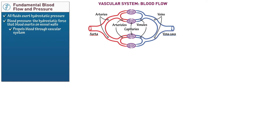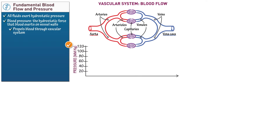Draw a graph that aligns with our illustration of blood flow. Label the y-axis as pressure in millimeters of mercury, numbered from 0 to 120. The unit millimeters of mercury refers to the force required to support a column of mercury of that height — so 120 millimeters of mercury is the force required to support a column of mercury 120 millimeters high.